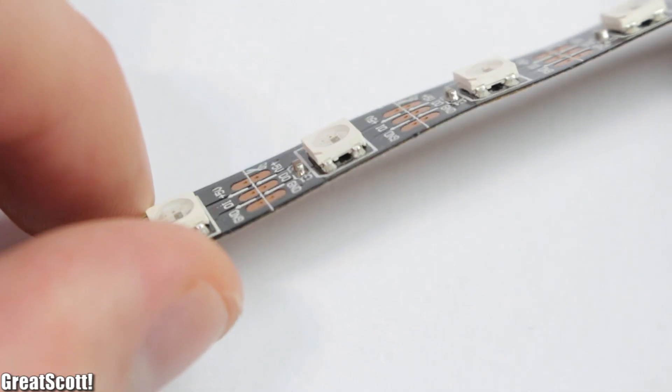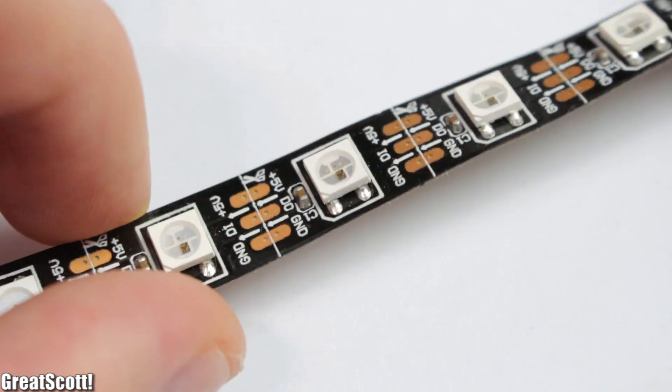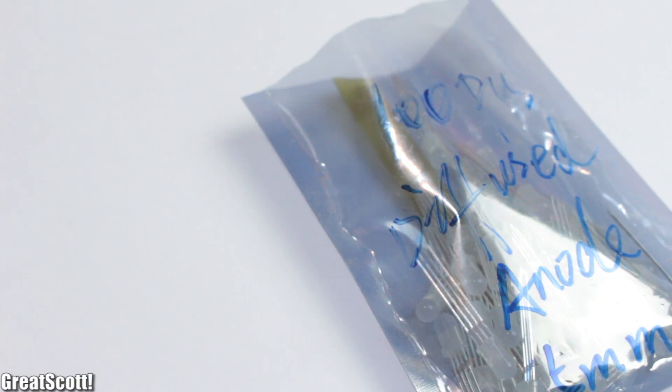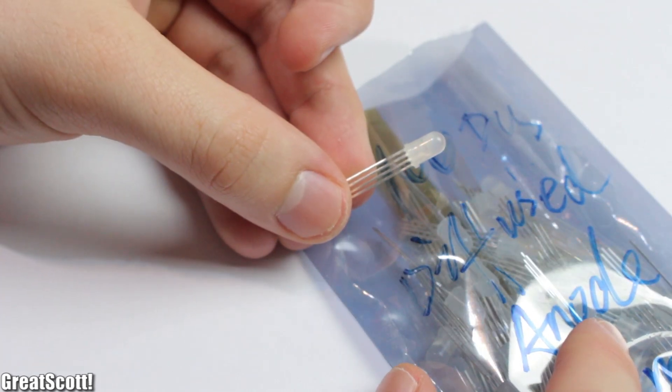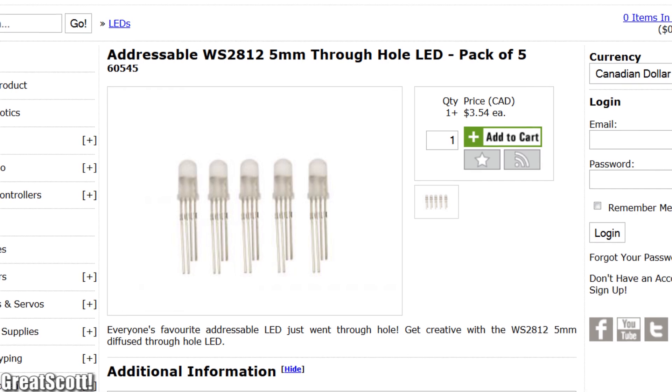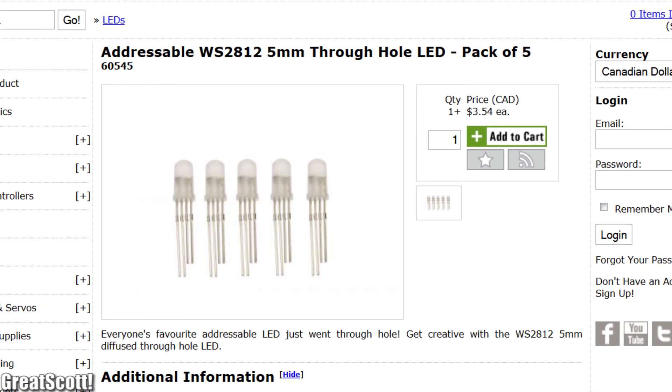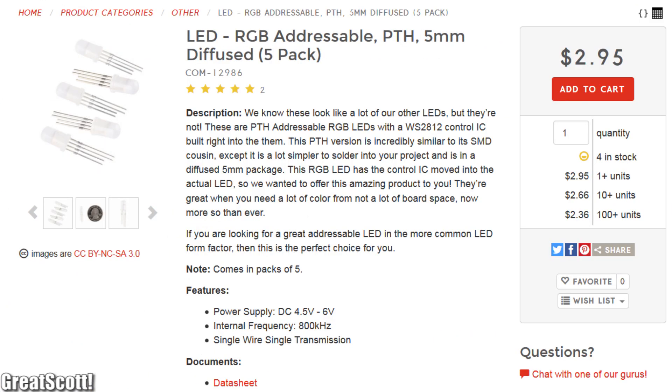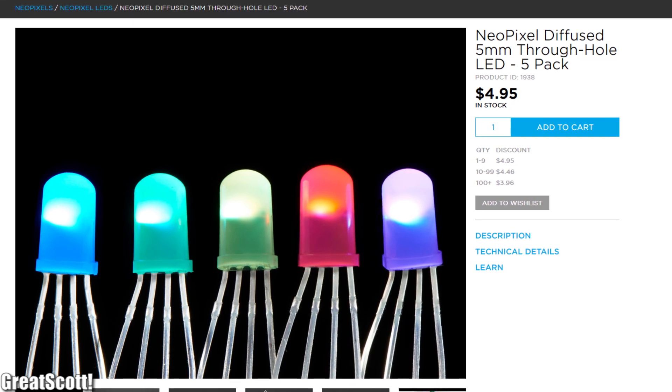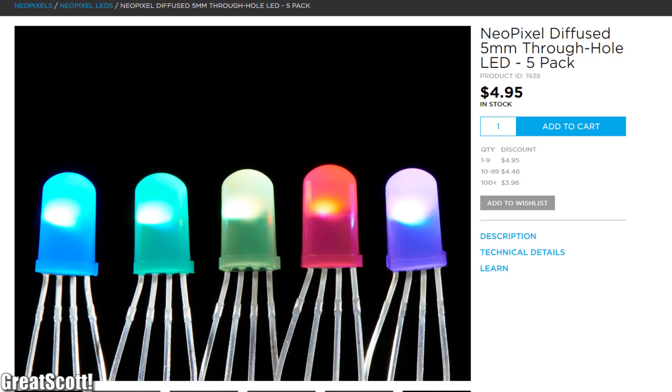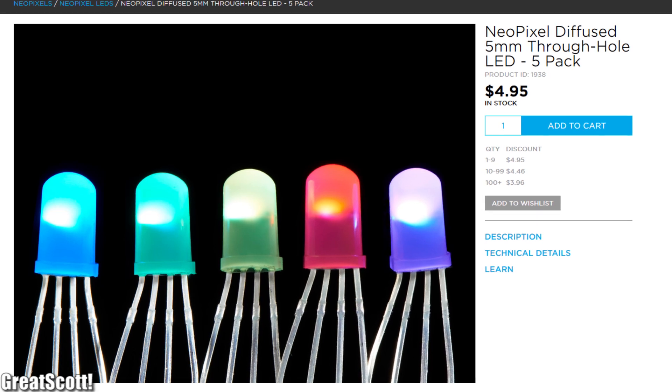But I think this SMD package is not ideal for the Matrix. So I searched for WS2812 LEDs in a normal dip package, like most people know their LEDs. And they do exist on various sites, but the price is a bit expensive. For example, Adafruit offers 5 of them for 5 bucks. That means I would need to spend 150 dollars for 150 LEDs.